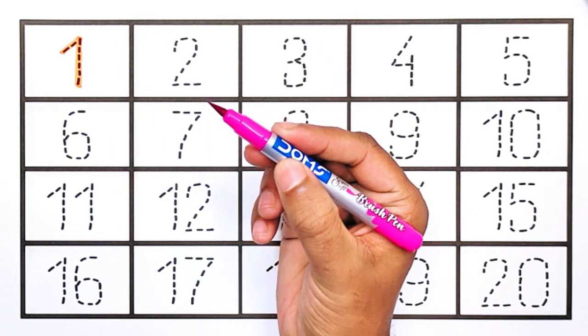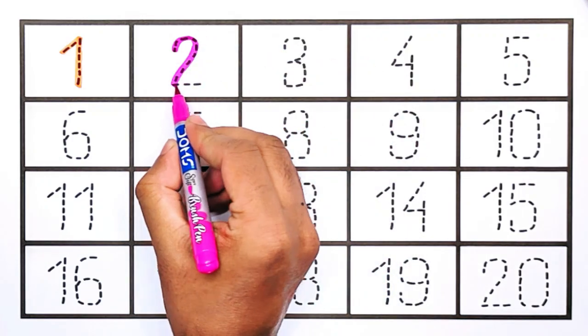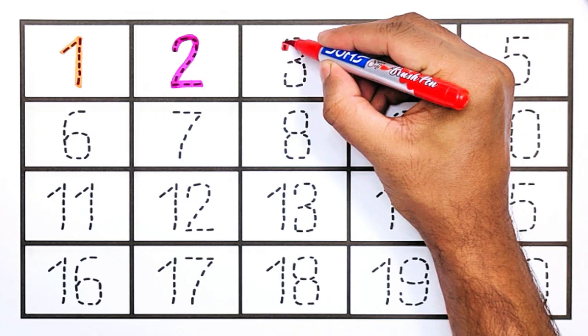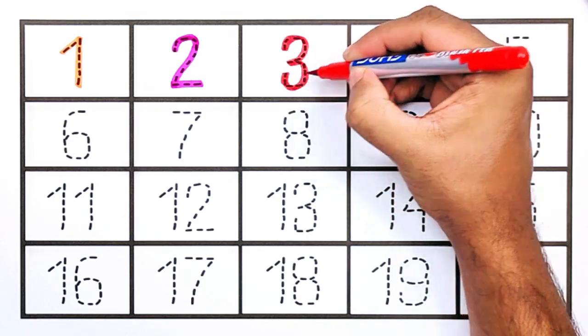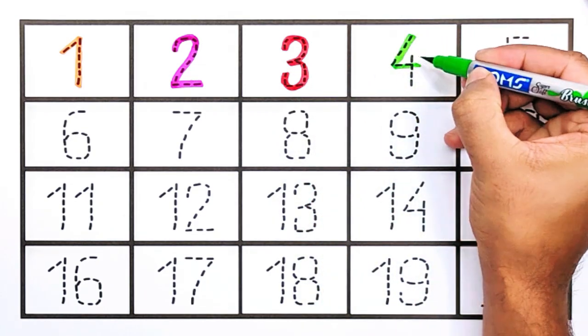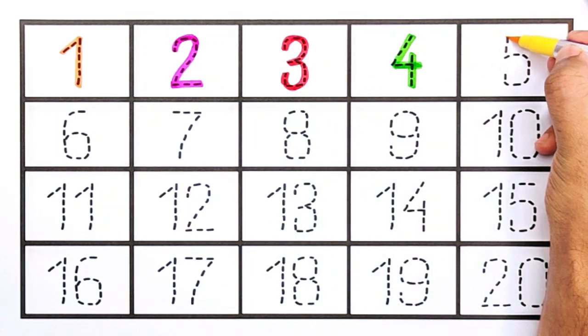One, pink color. Two. Two, red color. Three. Three, light green color. Four. Four, yellow color. Five.